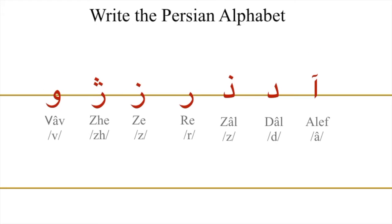Look at the way that the letters appear on the screen and write the Persian alphabet by moving your hand from top to bottom and from right to left. Alef.